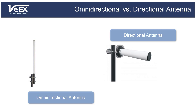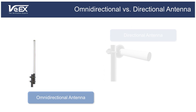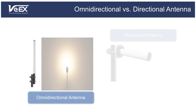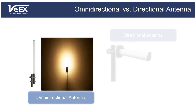An omni-directional antenna, or omni for short, radiates in a 360-degree pattern, which provides the most coverage in all directions. As an analogy, you can imagine an omni antenna's RF pattern as the light emitted from a light bulb. Omni antennas are often used in office or home settings where wide signal coverage is needed.